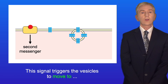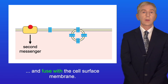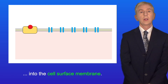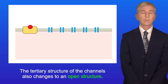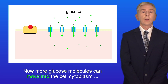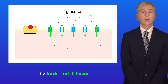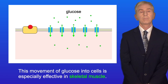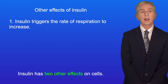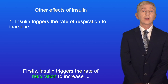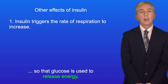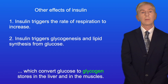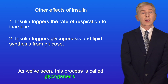The second messenger signal triggers the vesicles to move to and fuse with the cell surface membrane. The glucose transport protein channels are now inserted into the cell surface membrane, and their tertiary structure also changes to an open structure. More glucose molecules can then move into the cell cytoplasm by facilitated diffusion, and this is especially effective in skeletal muscle. Insulin also triggers the rate of respiration to increase so that glucose is used to release energy, and it activates enzymes which convert glucose to glycogen stores in the liver and muscles — a process called glycogenesis.